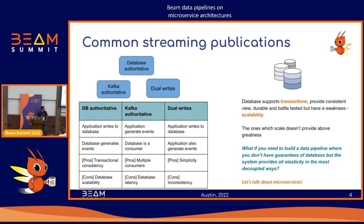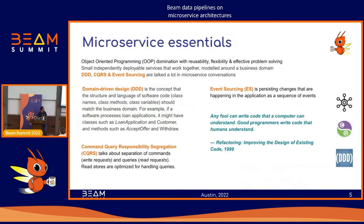Let's talk about microservices. We're all familiar with object-oriented principles — this has dominated the world for multiple decades and will continue to be relevant; it's not going to be replaced by domain-driven or any other pattern. The core essentials of object-oriented programming include flexibility and reusability. Microservices are basically independently deployable services that work together and model across the domain. When we talk about microservices, the terms that come up a lot are CQRS — command query responsibility segregation — domain-driven design (DDD), and event sourcing.